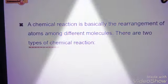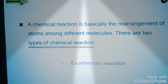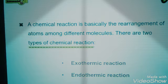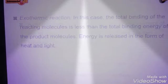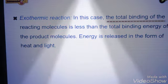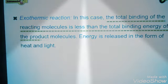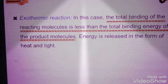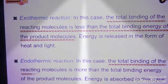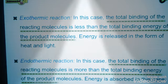There are two types of chemical reactions. One, exothermic reaction. Two, endothermic reaction. In exothermic reaction, the total binding of the reacting molecules is less than the total binding energy of the product molecules. In endothermic reaction, the total binding of the reacting molecules is more than the total binding energy of the product molecules.